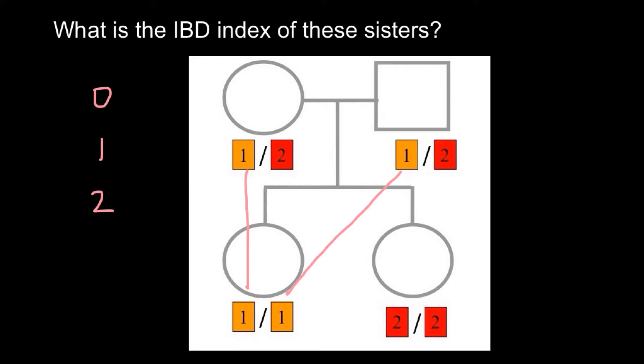And for this locus - this is the same locus - but here we can find different alleles. Allele 2 came from the mother's side and the second allele 2 came from the father's side.